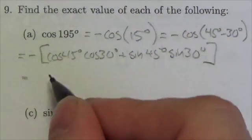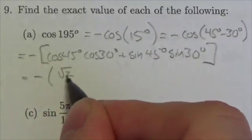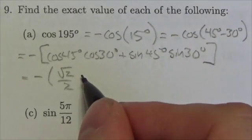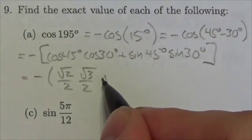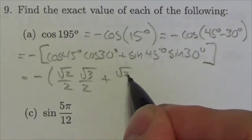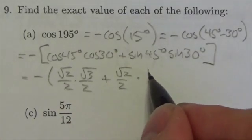And now, this will end up being, well, cosine of 45 is going to be root 2 over 2. Cosine of 30 degrees is going to be root 3 over 2, plus the sine of 45 is root 2 over 2. And the sine of 30 degrees is just 1 over 2.